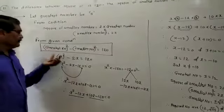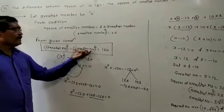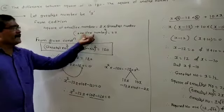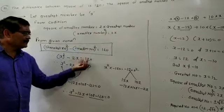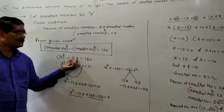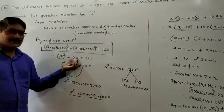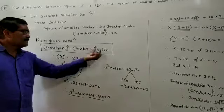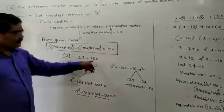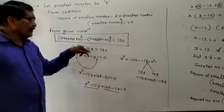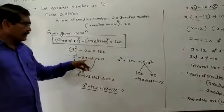The greatest number is x, so x squared. The smallest number squared is directly given as 2x — don't square 2x again. So x squared minus 2x is equal to 120. Transfer 120 from right to left, that becomes minus 120, giving x squared minus 2x minus 120 equals zero.